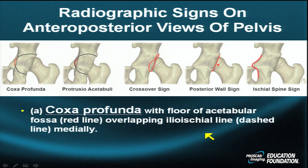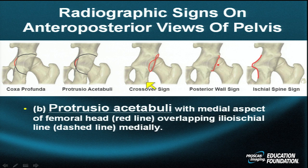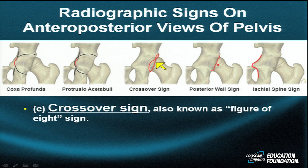Let's look at each of these phenomena diagrammatically. For coxa profunda, the floor of the acetabular fossa (red line) overlaps with the ilio-ischial line (dashed line). For protrusio acetabuli, the medial aspect of the femoral head (red line) overlaps the ilio-ischial line. In the crossover sign, the posterolateral wall and anteromedial wall crisscross each other, making a figure of eight when they change positions in patients with FAI.